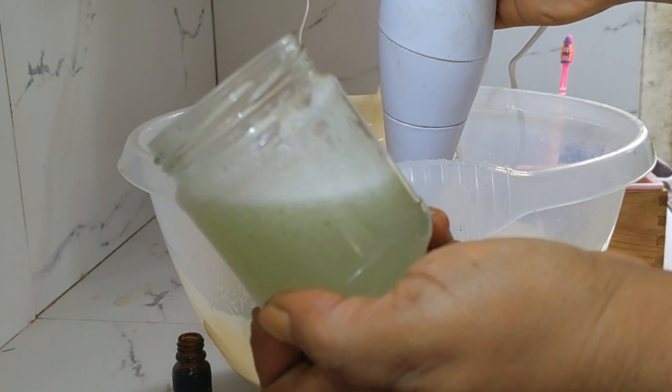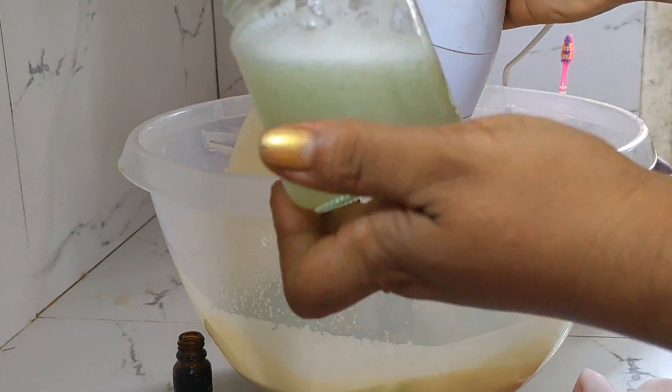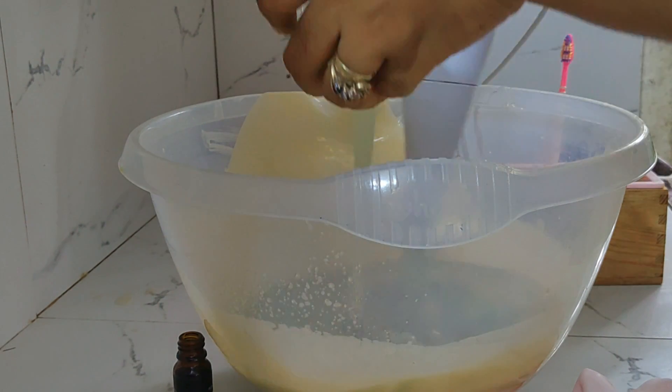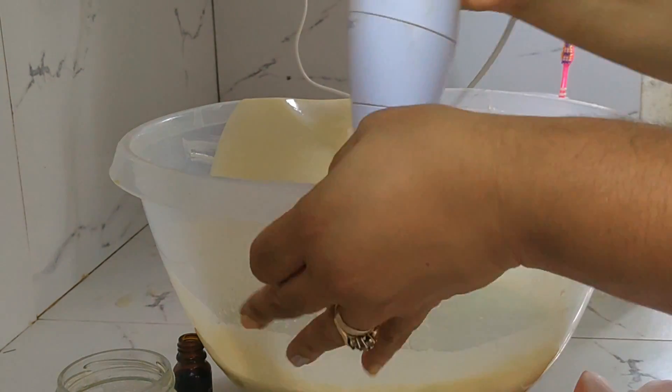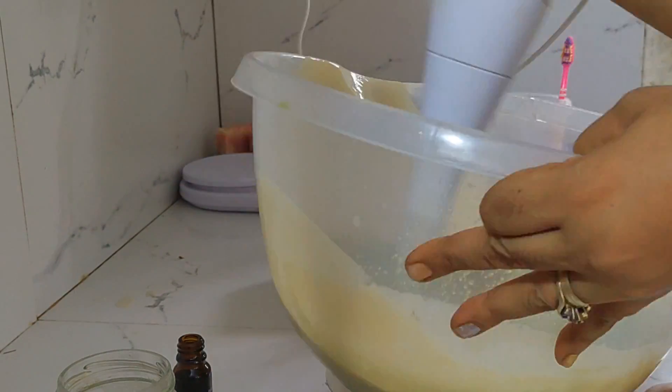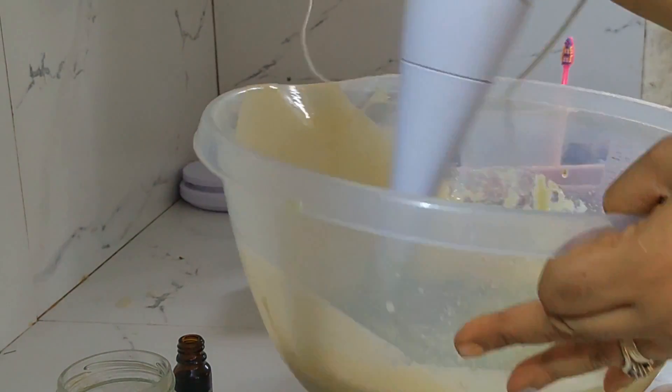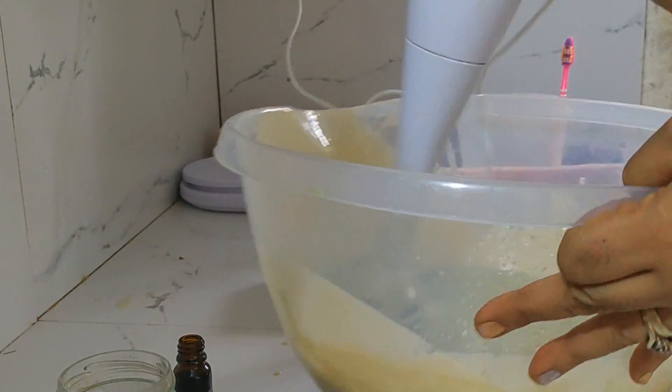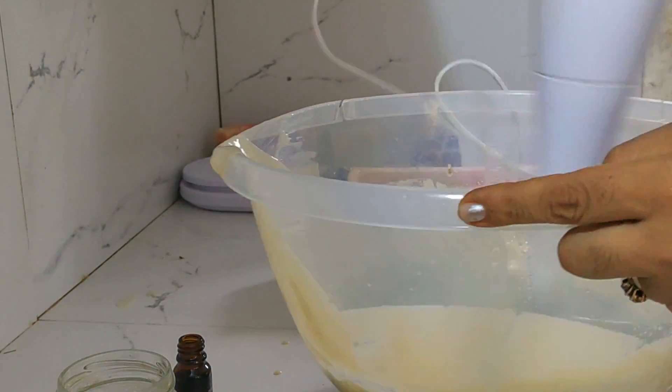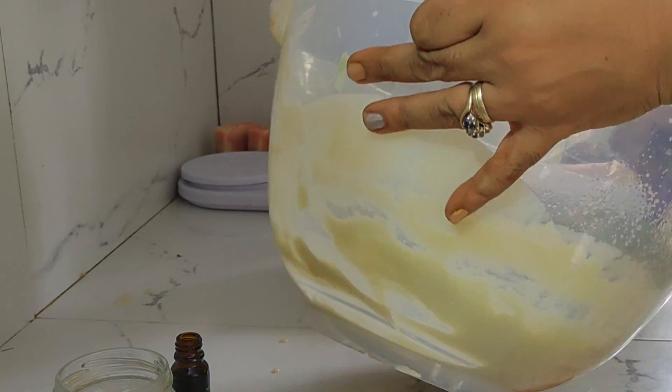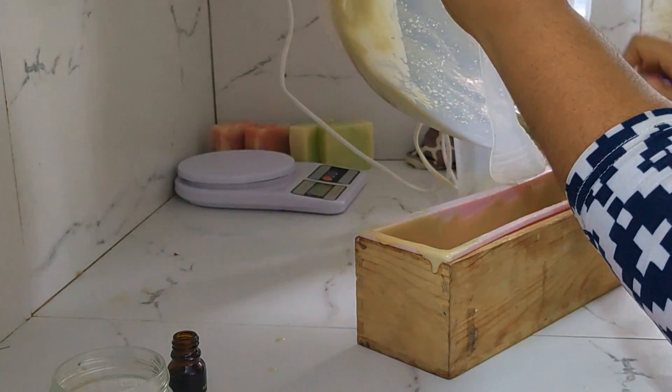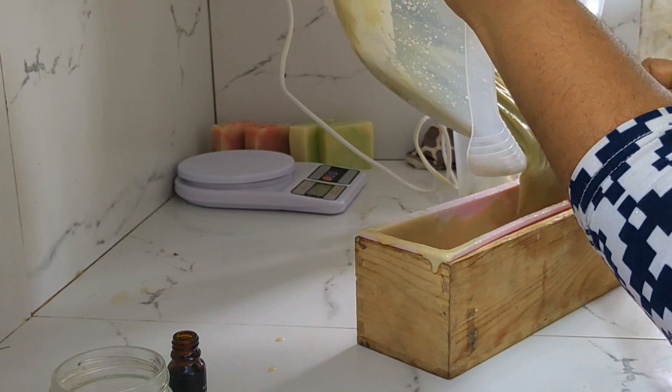I got a bit distracted at this point and had added the essential oils before the aloe vera. It should actually be the other way around. Add your aloe vera at trace before you add your essential oils and fragrance oils. This is because the essential oils and especially fragrance oils can cause your soap to thicken really quickly after trace. So I had to work very fast because my soap mixture became very thick and I had to quickly spoon it into the mold.